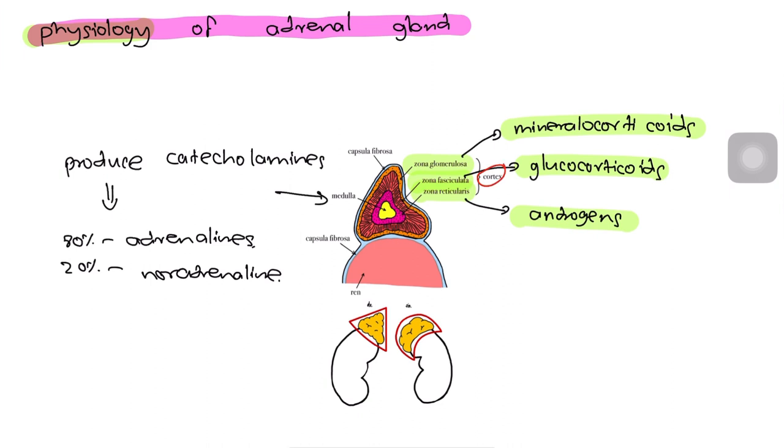The adrenal cortex produces mineralocorticoids, glucocorticoids, and androgens. The adrenal medulla produces adrenaline and noradrenaline.